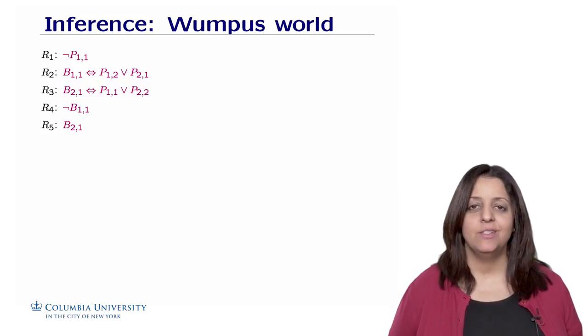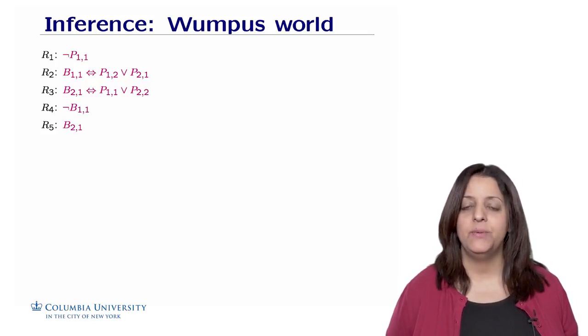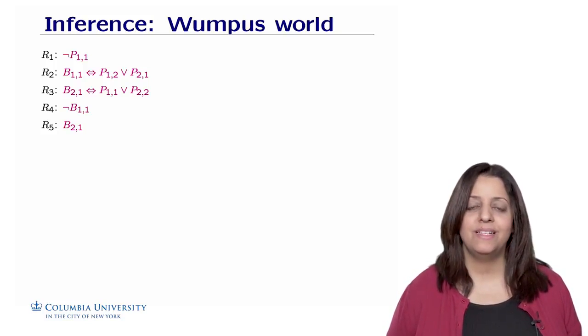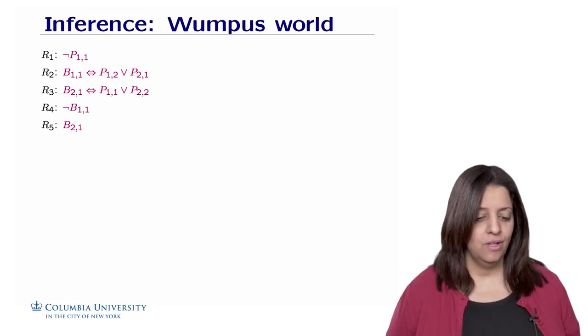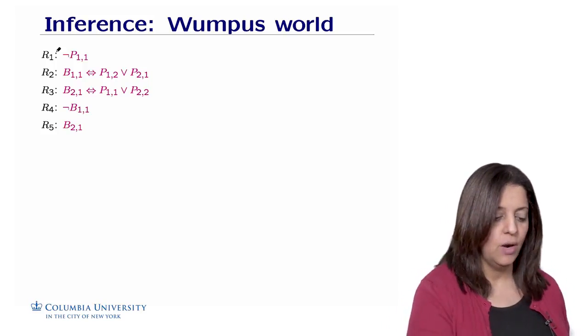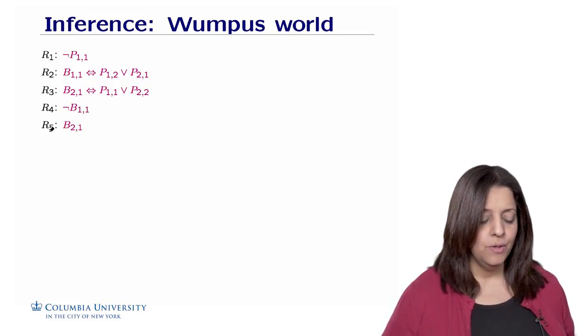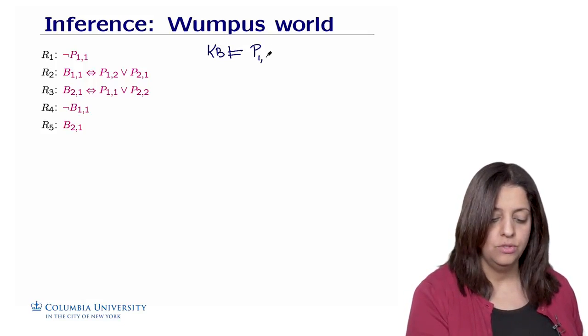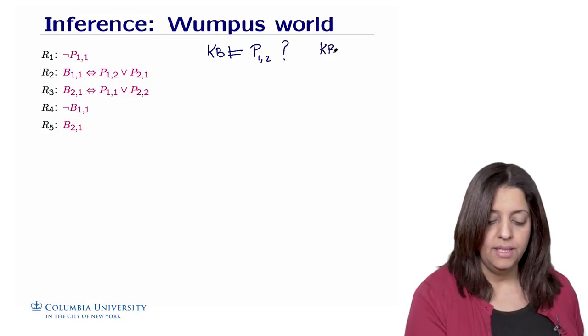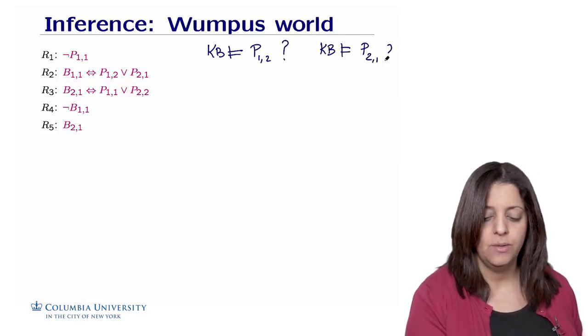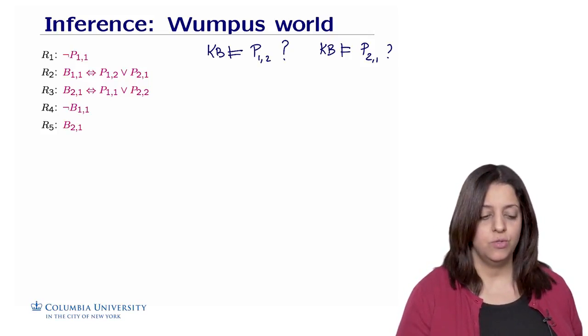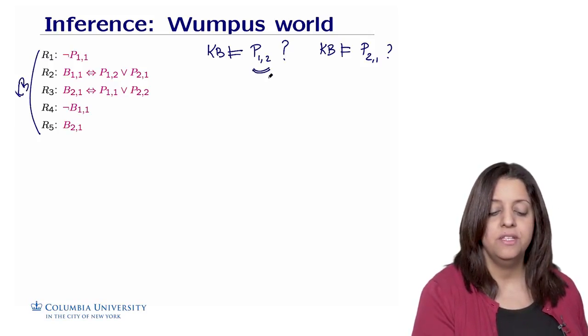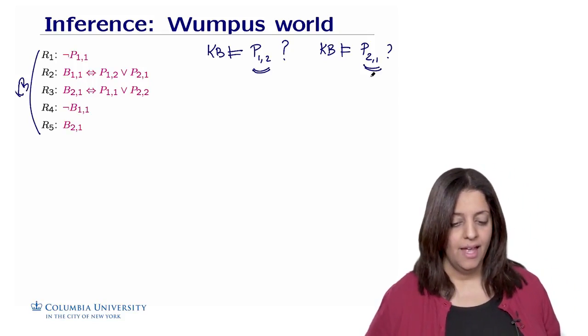Now suppose we don't have model checking as a tool. We can only do inference using modus ponens and whatever equivalence propositional logic formulas we found earlier. No semantics at all, just syntax. We're going to focus on the knowledge base of the reduced Wumpus world in which we have the rules R1, R2 through R5. What we want to prove, for example, is whether KB entails the proposition p12 and whether KB entails the proposition p21. Can we use inference rules on this knowledge base to actually derive information about whether this is true or false?